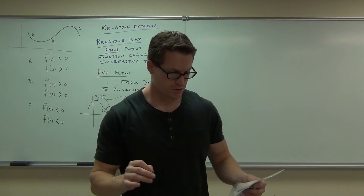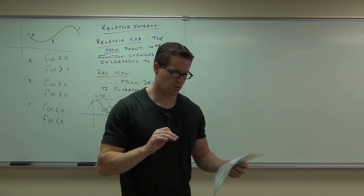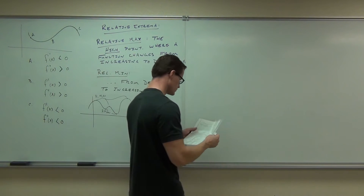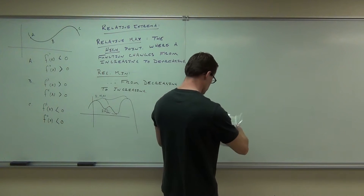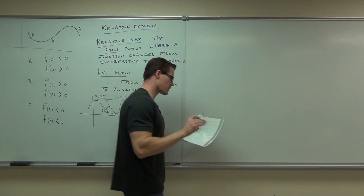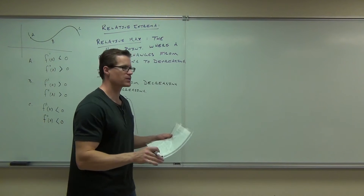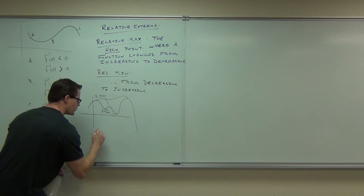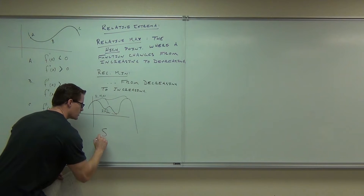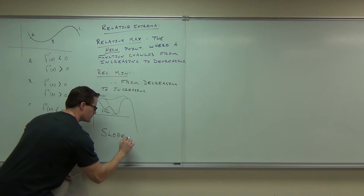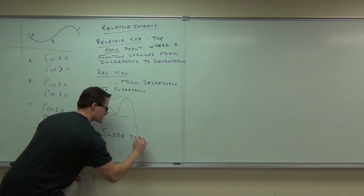What we call those are critical numbers. So what's happening to the slope at a relative max or min? The slope is zero. So at all these points, note the slope is zero.